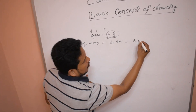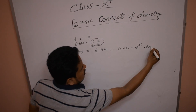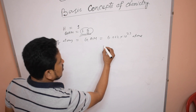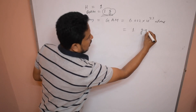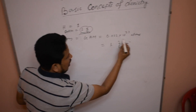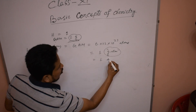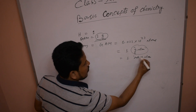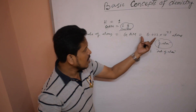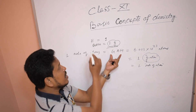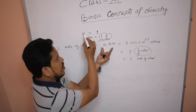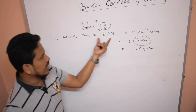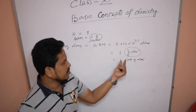That gram atomic mass contains Avogadro's number of atoms — always remember this. Avogadro's number of atoms is 1 mole of atoms, also called gram atomic mass, also called 1 gram atom. So gram atom is actually one mole of atoms, which contains Avogadro's number of atoms, that weighs gram atomic mass — meaning atomic mass expressed in gram units.